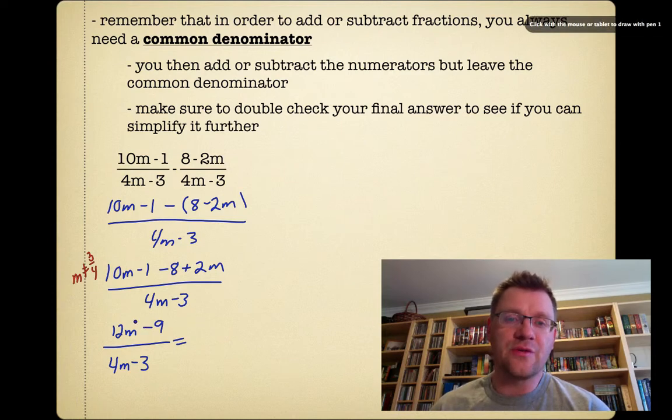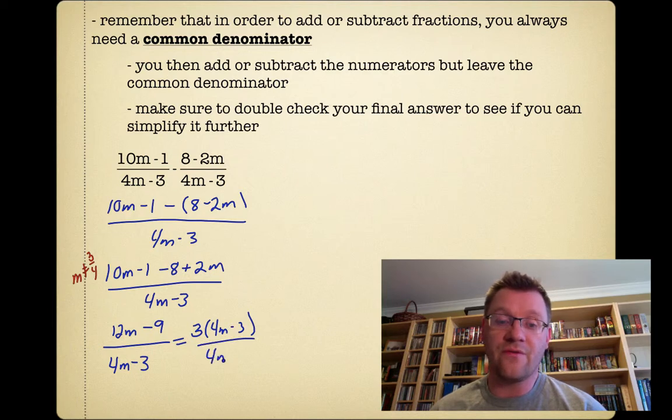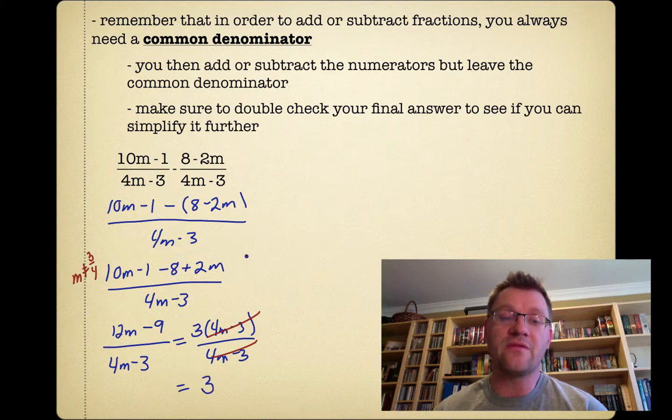So now we want to make sure to see if we can simplify this thing any further. We can take out a greatest common factor here of 3 out of the top. And we get 4m minus 3. And we also have 4m minus 3 in the bottom. So those two things cancel out. So we are left with just an answer of plain old 3. Now it's not always going to work out that way. But you always want to make sure to double check your final answer to see if it does work out that way.